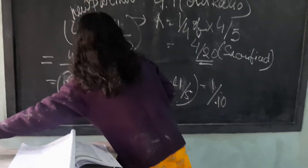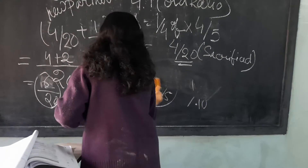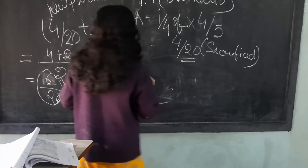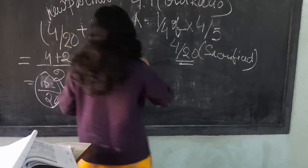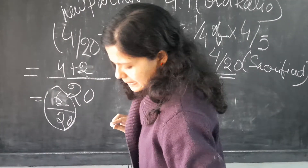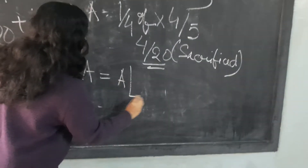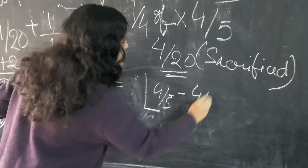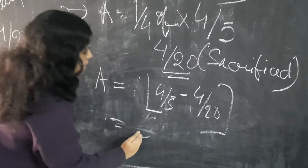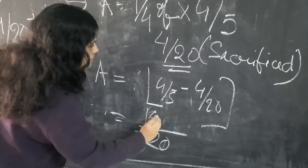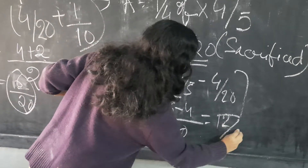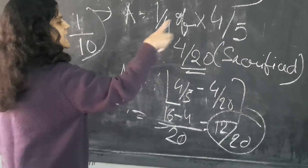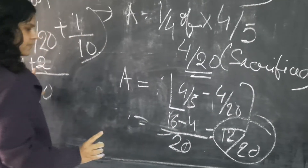Now we have to find out A and B's new share of profit. A's initial share is 4 by 5. How much has A sacrificed? 4 by 20. So A's new share is 4/5 minus 4/20, which gives 16 by 20 minus 4 by 20 — that is 12 by 20. That is A's new share.